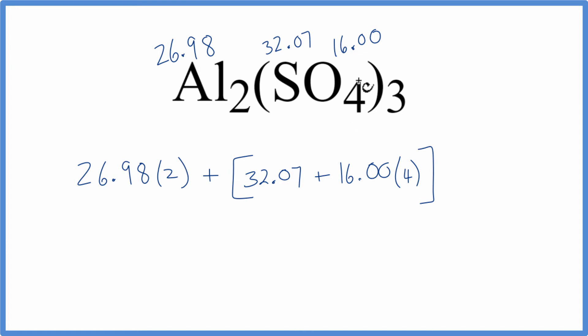Then we need to multiply everything in parentheses by the three, because this three applies to the whole sulfate ion, SO4. So we have three SO4s, and we put a three on the outside.